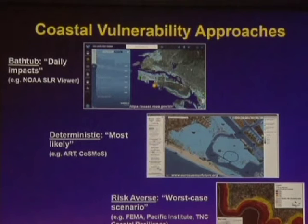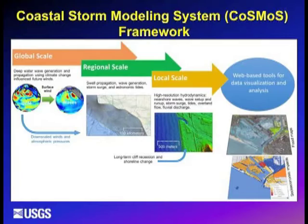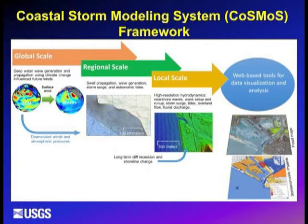California is blessed with a really incredible array of science and support for coastal policy. What I'm most involved with is Cosmos, the Coastal Storm Modeling System — a deterministic approach. The concept is to take future projections of the global climate and downscale those into wave models and local hydrodynamic models until you get to very fine resolution along the coast, making predictions of flooding, coastal change, and cliff retreat on the order of tens of meters. The flooding resolution is at two meters, cliff retreat at 100 meters.